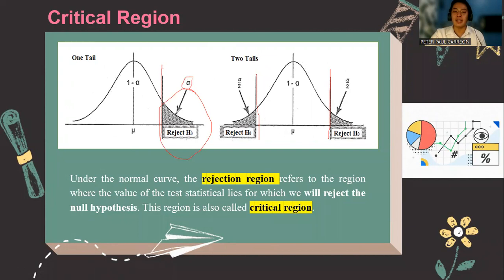If the vertical line lies inside the rejection region, then the correct decision is to reject the null hypothesis. However, if it is located in the non-rejection region, which is 1 minus alpha, then the correct decision is to fail to reject the null hypothesis.